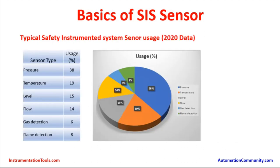Regarding typical Safety Instrumented System sensor usage — this data was collected in 2020 by an agency in the United Kingdom for health, safety, and environmental systems. This is the overall population of safety instrumented sensors used in process industries. We can see a pie chart showing the distribution. Pressure transmitters are the most common, having a population of 38 percent.